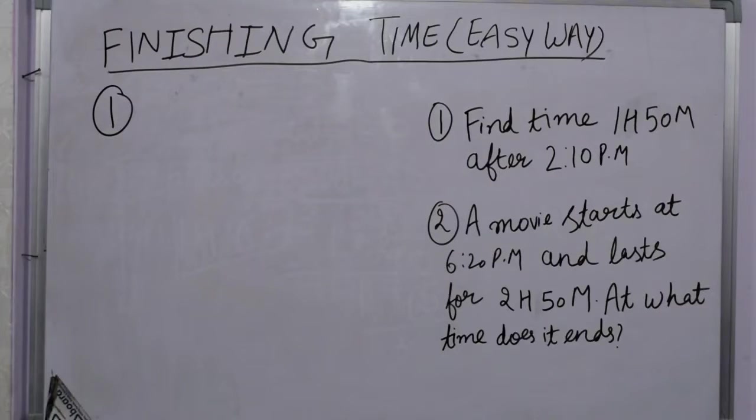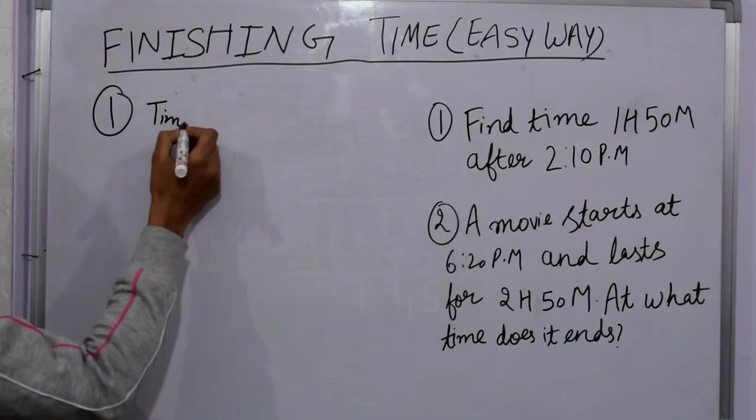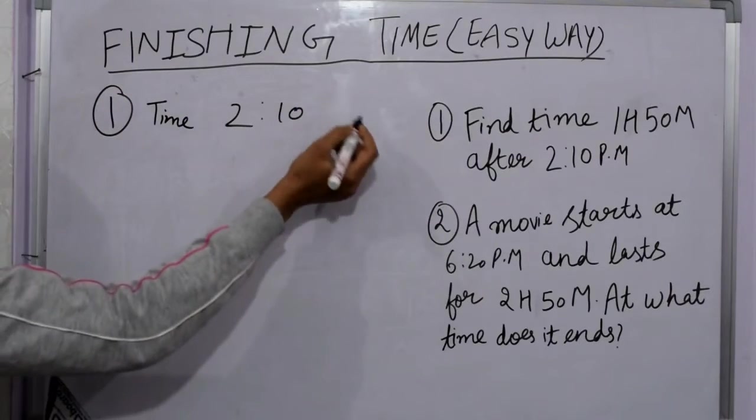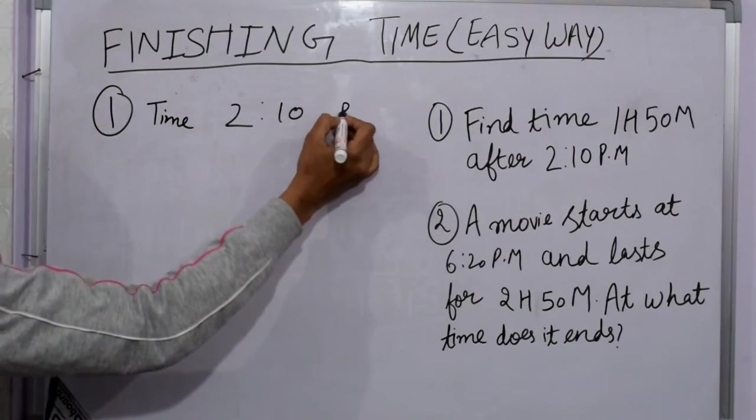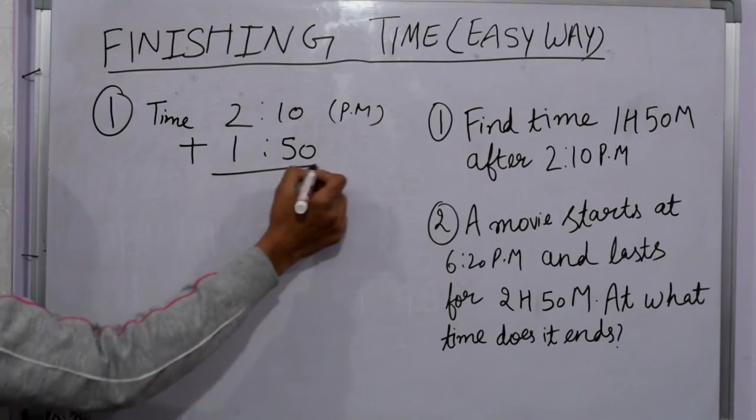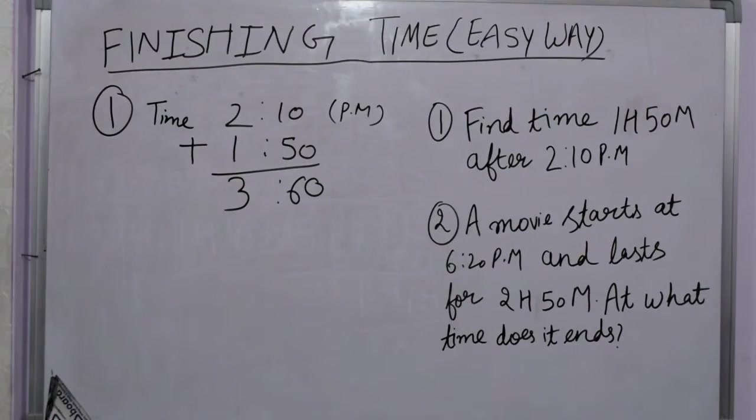Number 1: Find time 1 hour 50 minutes after 2:10 PM. Time is 2:10 PM. Just add 1 hour 50 minutes. We got 3 hours 60 minutes.